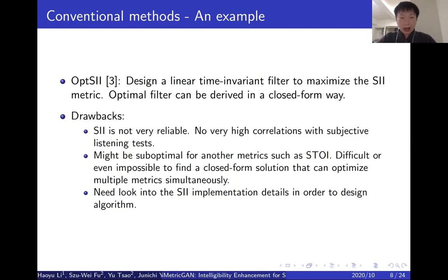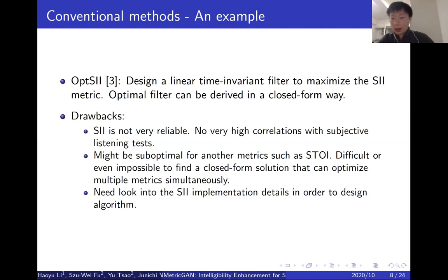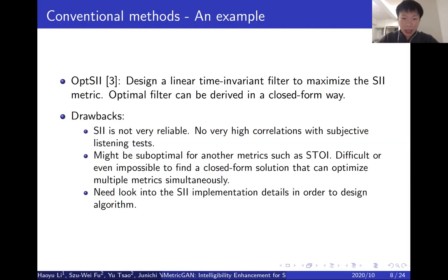First, the SI they are optimizing is not very reliable — it didn't show high correlation with real subjective human listening tests. Second, optimizing SI doesn't mean another metric such as STI can be optimized as well. If we want to optimize multiple metrics simultaneously, it's very difficult or even impossible. Third, in order to design such an algorithm, we have to look inside the implementation details of SI and make some approximations for mathematical tractability. SI is relatively simple, but for more complex metrics, it's very hard to find a closed-form solution to optimize them.